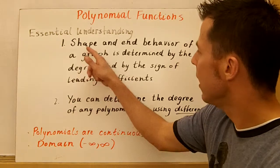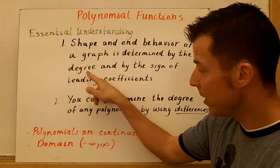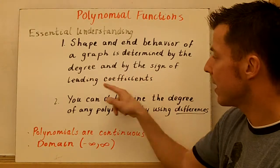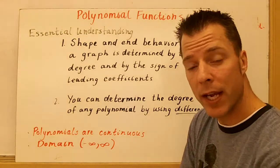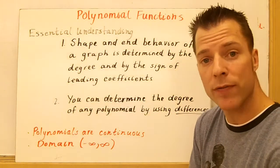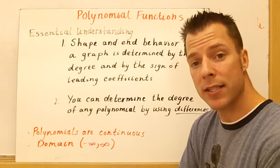Two things you've got to understand. The shape and end behavior of a graph is determined by the degree and by the sign of the leading coefficient. So what that means is the power and the value on your leading coefficient. The leading coefficient is on the term that has the highest power.